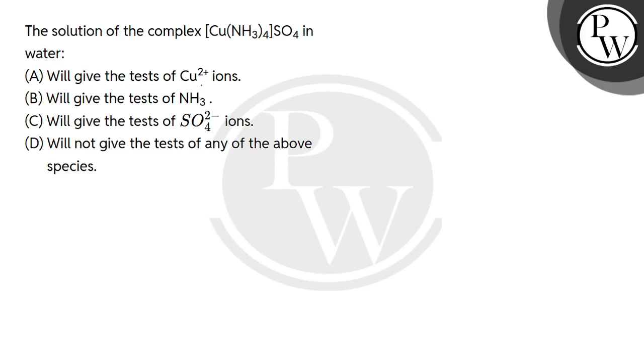Option A: Will give the tests of Cu²⁺ ions. Option B: Will give the tests of NH₃. Option C: Will give the tests of SO₄²⁻ ions. Option D: Will not give the tests of any of the above species.